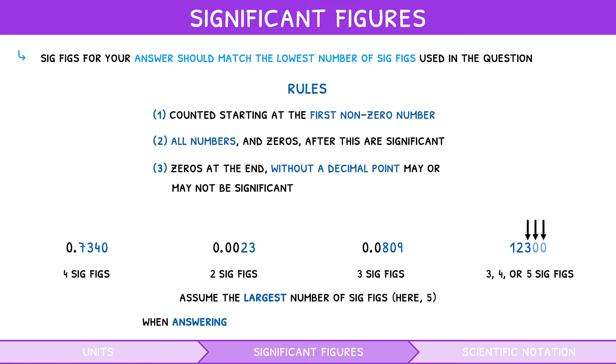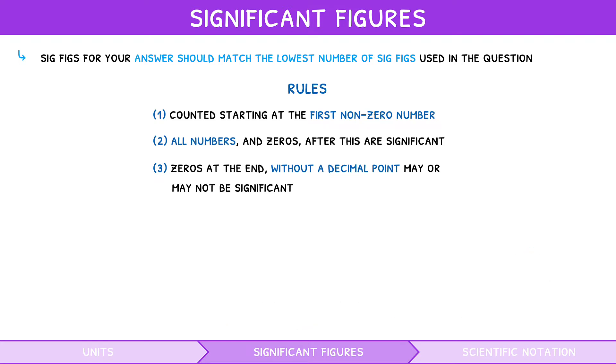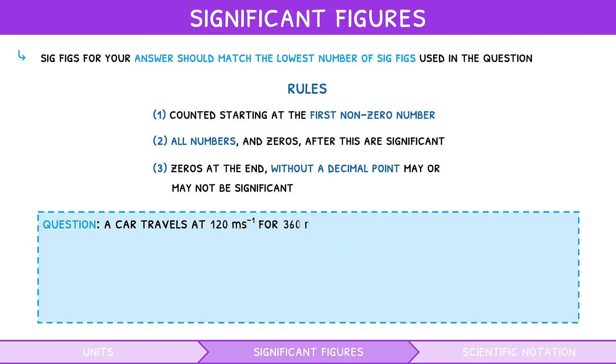However, when answering, we round our answer to the lowest number of significant figures given. So, in an example question, a car travels at 120 meters per second for 360 meters. How long did the car travel? So, speed equals distance divided by time, and thus the time is 3 seconds. Both 120 and 360 have 2 or 3 sig figs, but as they are not in scientific notation, we will assume 3, so the answer must also have 3 sig figs. Thus, the final answer would be written as 3.00.